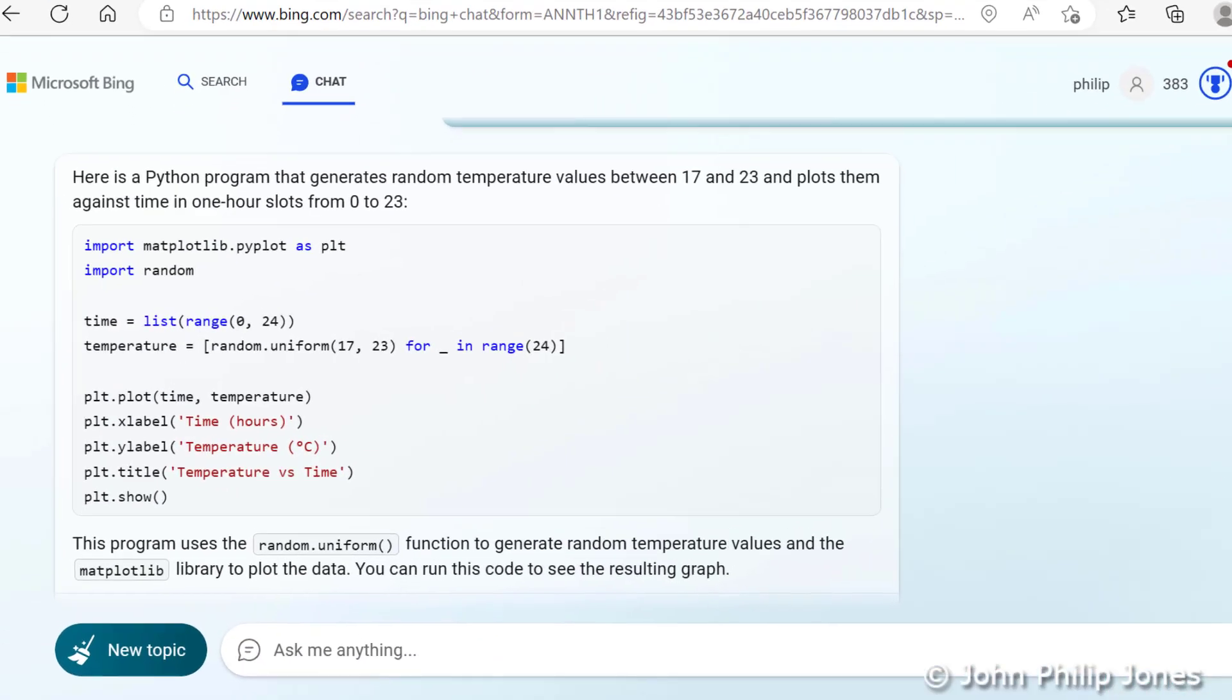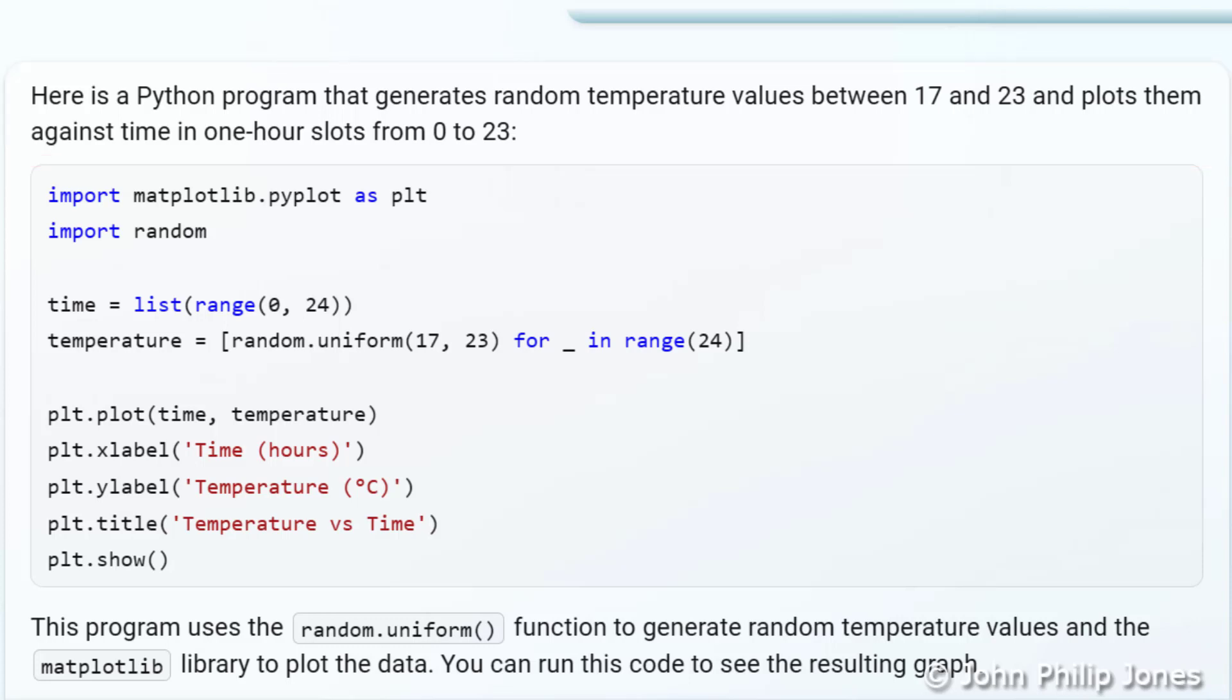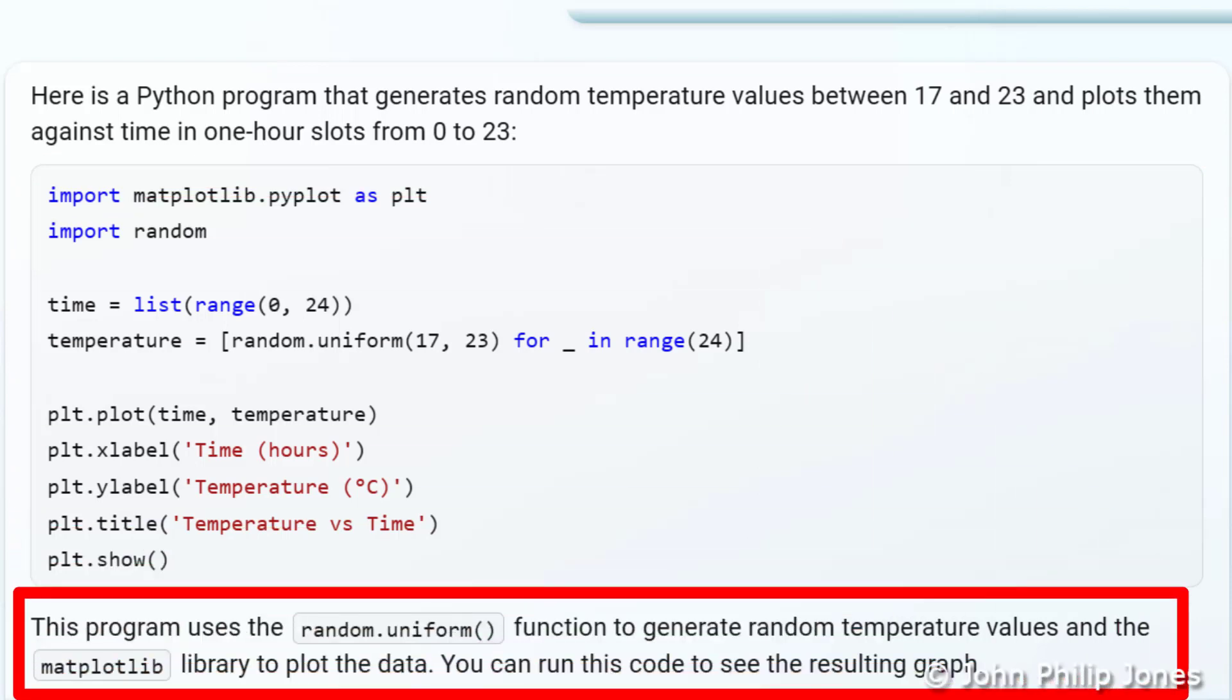If you look here, it says: Here is a Python program that generates random temperature values between 17 and 23 and plots them against time in one-hour slots from 0 to 23. And here is the computer program. Down here it says this program uses the random.uniform function to generate random temperature values and the matplotlib library to plot the data. You can run this code to see the resulting graph.